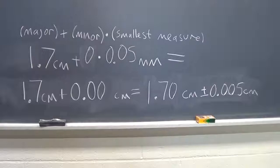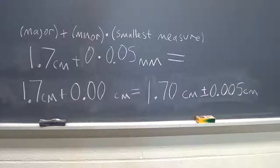What that does for our calculation is we still have a major scale of 1.7 centimeters, but now our minor measurement is zero increments, and we multiply that times our smallest measure of 0.05 millimeters. What we get back is a more precise measure of 1.70 plus or minus 0.005 centimeters.